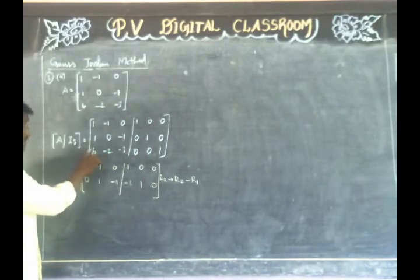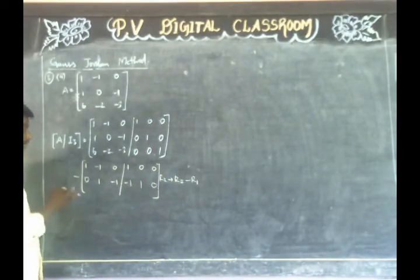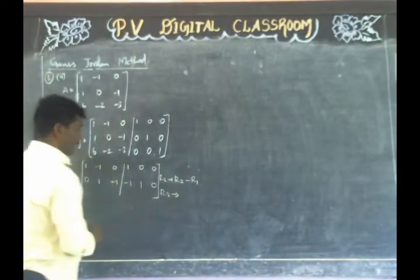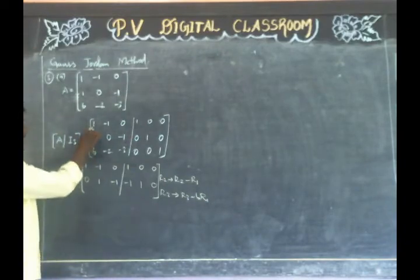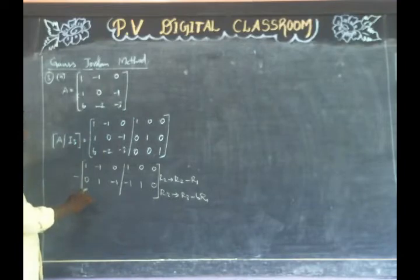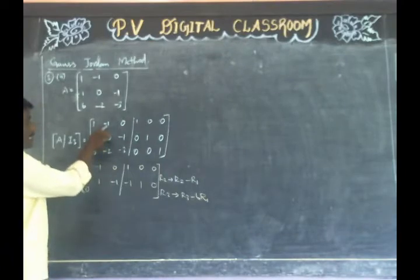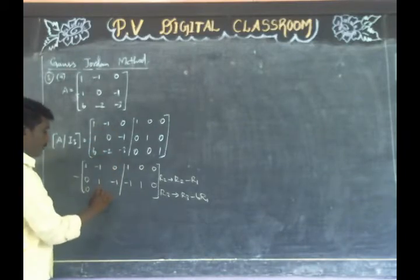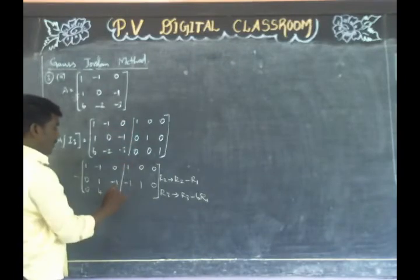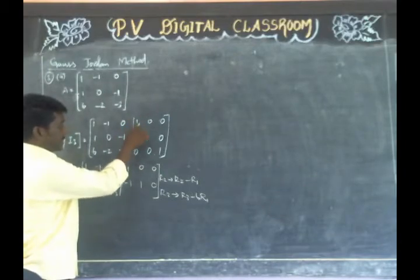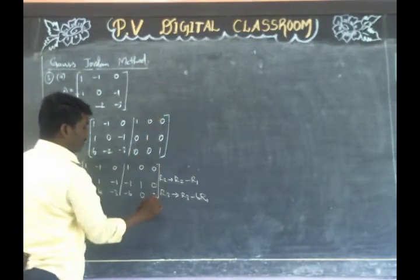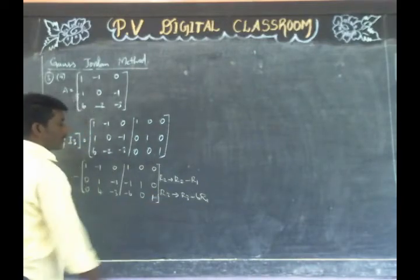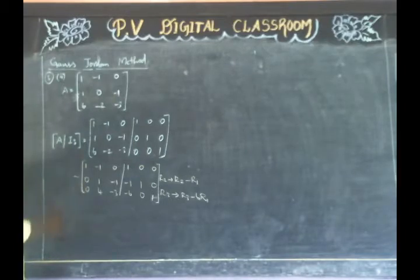In this place, we will have 0 — stars will be 0. So the result is: minus 2 plus 6 is 4, then minus 3, then 0, then minus 3, then 0, then 6, then 0 minus 6 is minus 6, then 0 minus 0 is 0, then 1 minus 0 is 1. That's all.